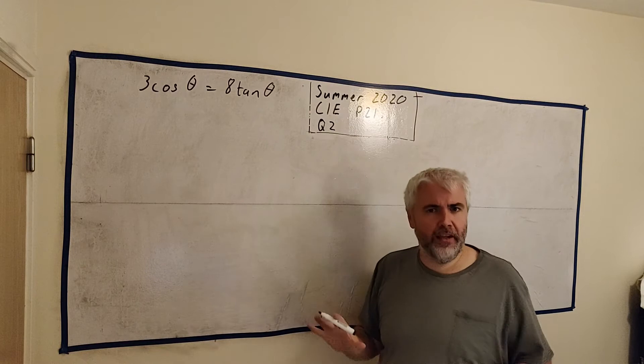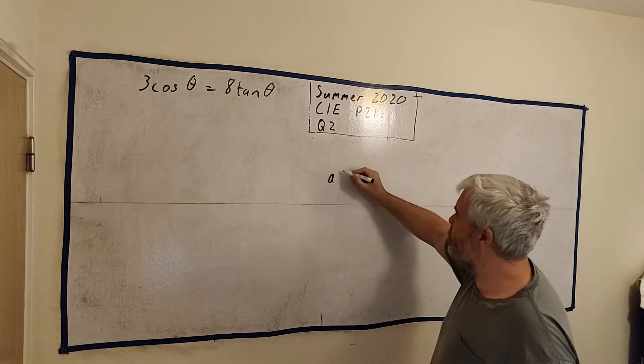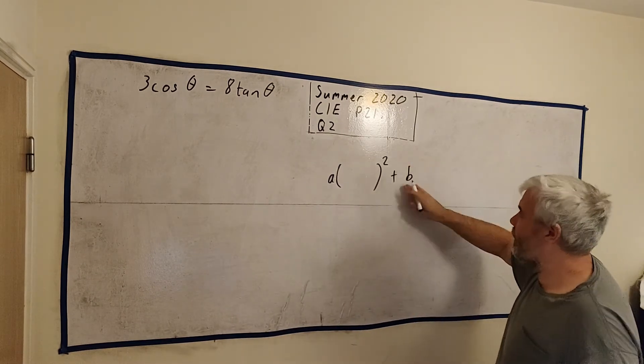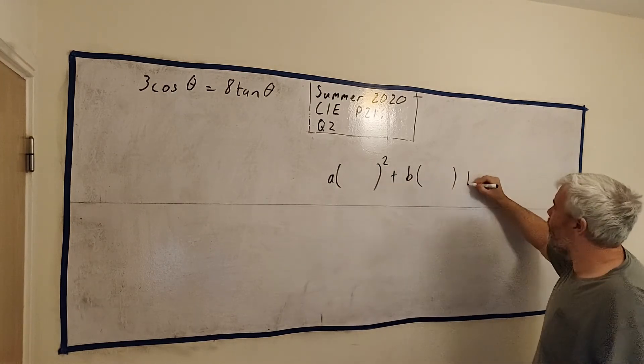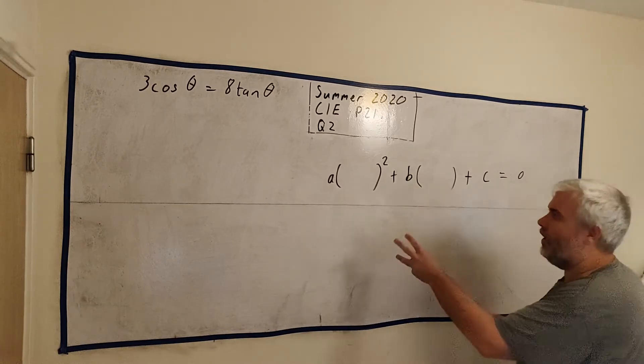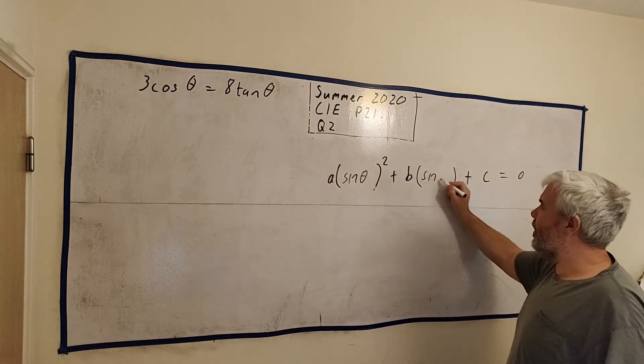First, it would be helpful to know what we're looking for. We know what a quadratic equation is. It's something, usually x squared, but instead of x squared, let's leave a blank squared, plus something, we usually call it bx. Again, let's leave a blank this time, plus a number equals 0. That's what I'd like this to look like. But instead of x squared, I'm going to have sine theta. That's what they're asking for.